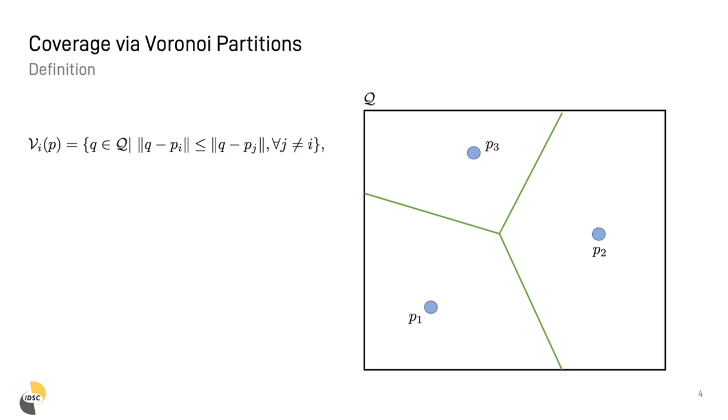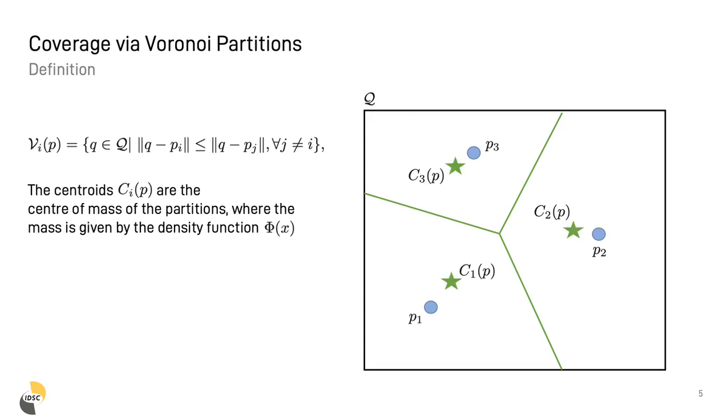Moreover, Voronoi partitions will also help in simplifying the definition of the coverage problem. Once the partitions are defined, we can also compute the center of mass of the partitions, where the mass is given by the density function. The center of mass of the partitions are also called centroids. In the previous example, the density function is given by the temperature profile over the region to partition.